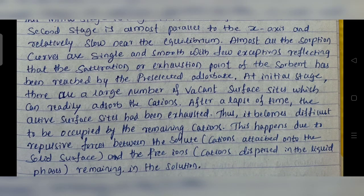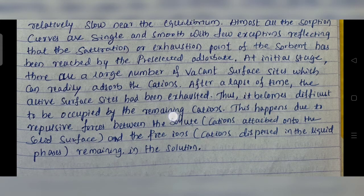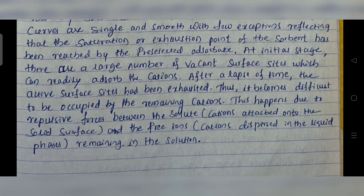At the initial stage, there are a large number of vacant surface sites which can readily adsorb the cations. After a lapse of time, the active surface sites become exhausted, making it difficult for remaining cations to be accommodated. This happens due to the repulsive forces between the solute cations attached onto the solid surface and the free cations dispersed in the liquid phase remaining in the solution.